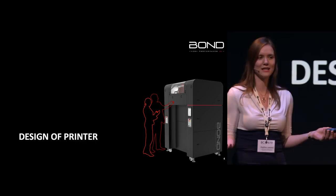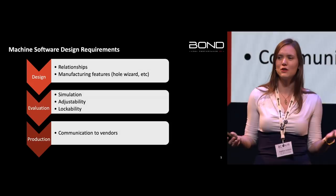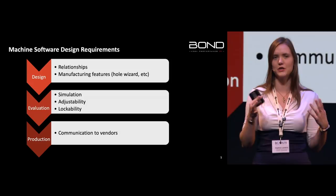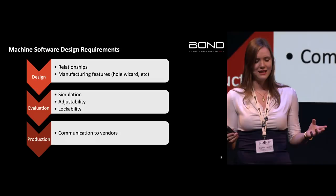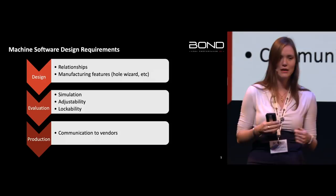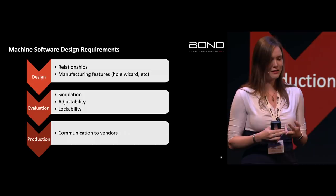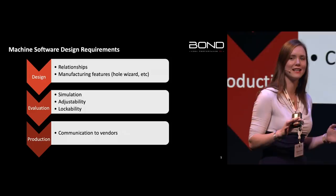Let's start with the printer, because that's our main business. For every design process there are many different models, but I summarize it in three simple steps: design, evaluate, and produce. Especially evaluate is very important — a machine never gets designed right the first time. It just doesn't happen.